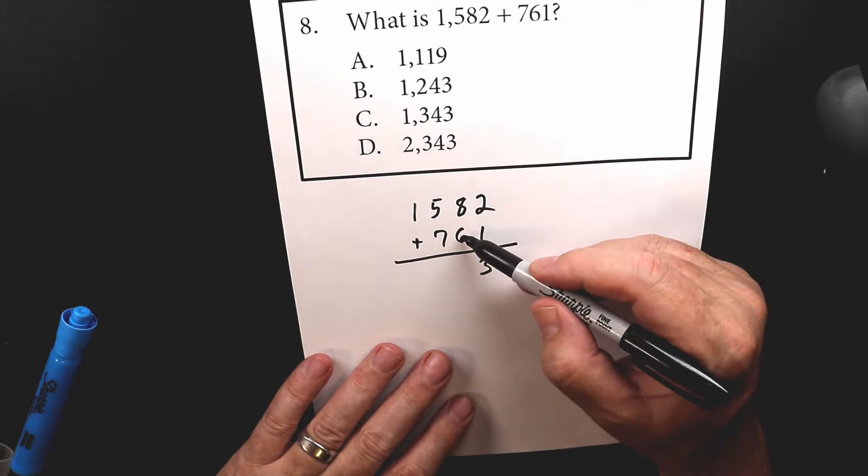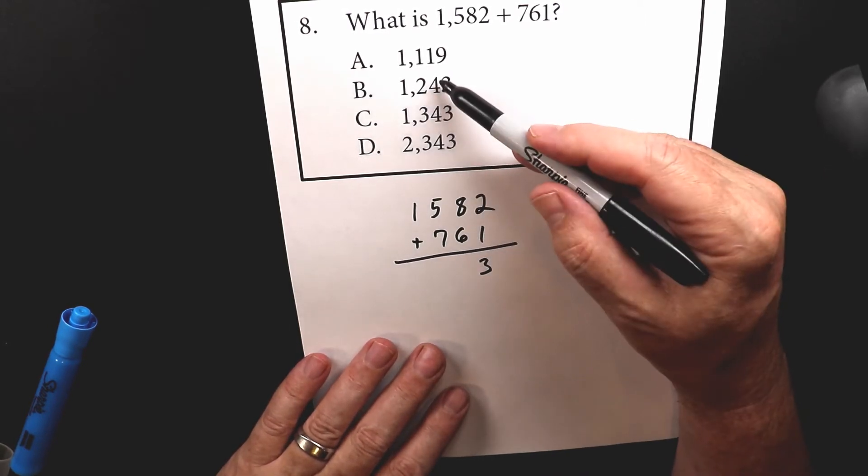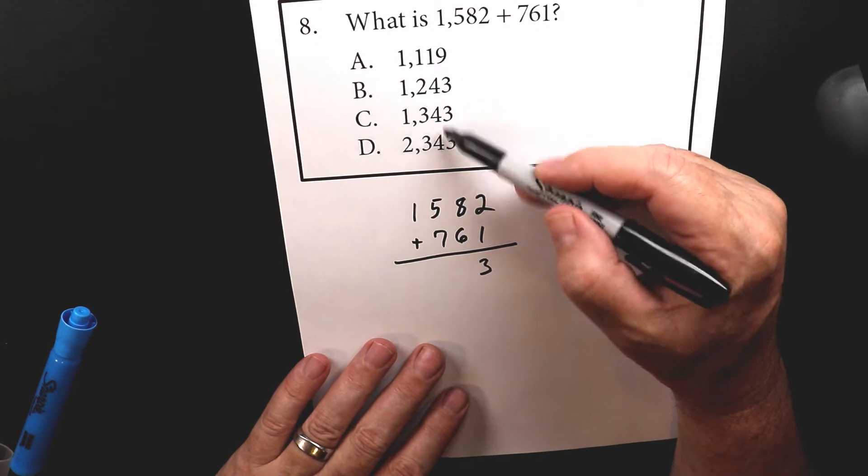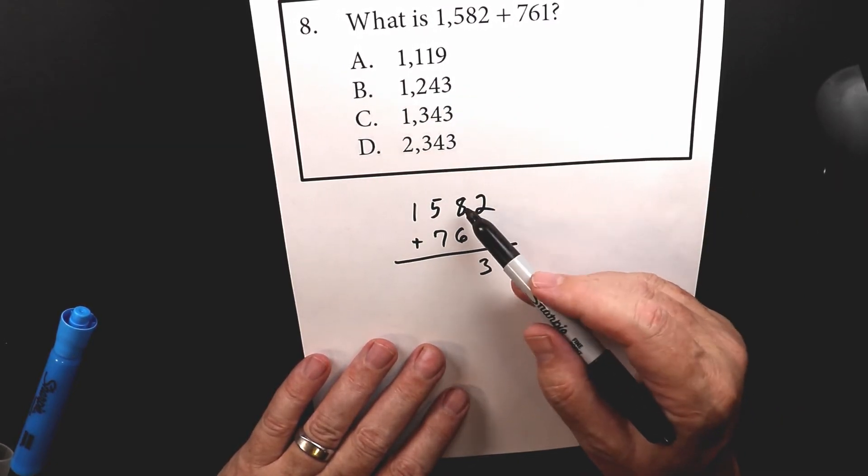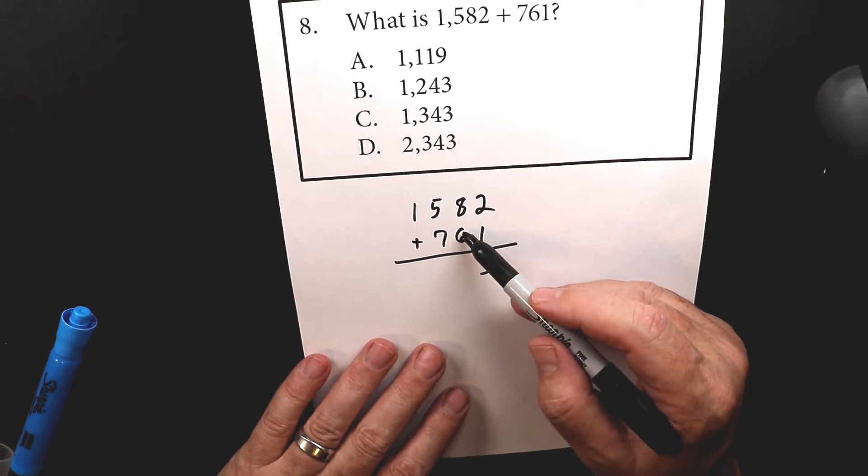Now, 8 plus 6, I know that's 14, but look, we have 3 number 4s there. So they're giving you 3 possibilities here. But let's make sure that you know that this is the right number, that 8 plus 6 is 14.